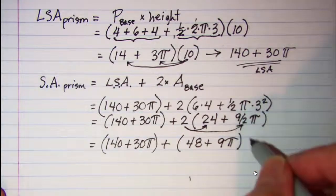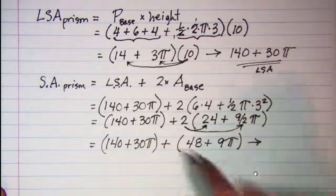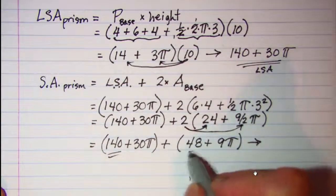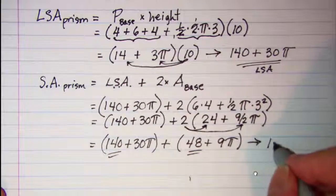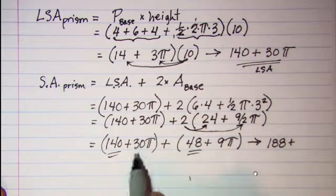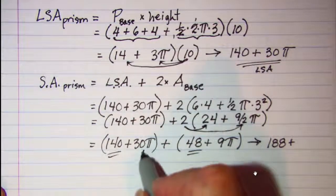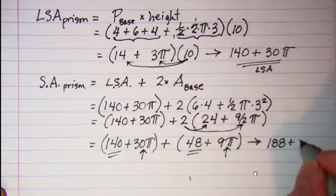If we add these two binomials together, again I have to add the rational numbers together. That is 188 and then add the irrational terms together and we have 39π.